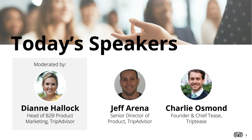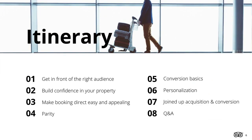Our speakers who will be addressing those topics are Jeff Arena, Senior Director of Product for TripAdvisor, and Charlie Osmond, Founder and Chief Tease for TripTease. Jeff will start off by sharing insights into how you can use TripAdvisor to get in front of the right audience, build confidence in your property, and make direct bookings easy and compelling. Then Charlie will address parity, conversion basics, personalization, and thinking acquisition and conversion. From there, we'll move into Q&A, addressing the most common questions submitted in the webinar registration survey. And now, turning it over to Jeff Arena.